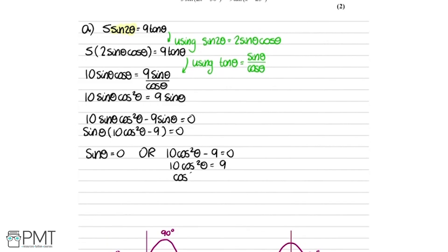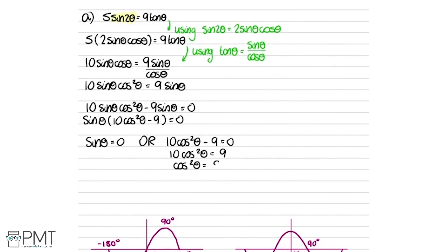From 10cos²θ − 9 = 0, we get cos²θ = 9/10. Square-rooting both sides gives cosθ = ±3/√10, since square-rooting an equation gives both positive and negative values. We now have two much simpler equations to solve.